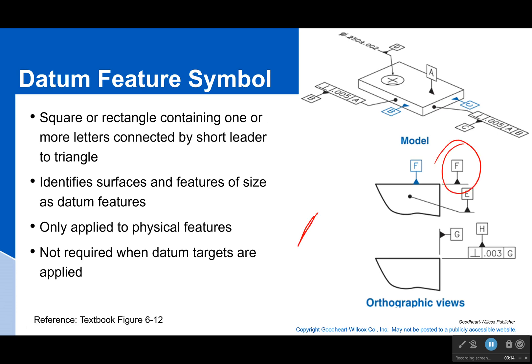Okay, how you do it is with this thing right here - this is our datum feature symbol. What does it look like? Well, it's got a triangle on the bottom which is either going to be attached to a leader line or an extension line, and then above that is going to be a little straight line, so we have a rectangular or a square box that will have either one or more letters in it.